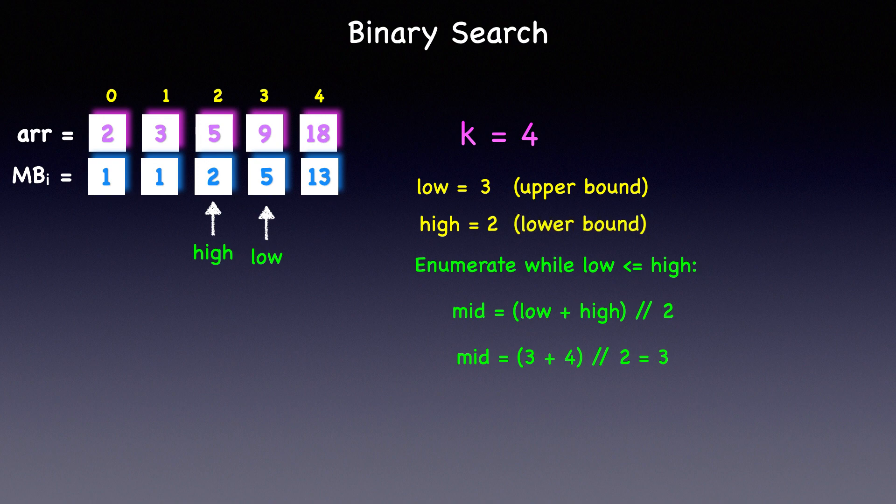Do recall from the earlier slides that since the high index has crossed over the low index, the low index will become the upper bound and the high index becomes the lower bound between which the kth positive integer is located. Therefore, the kth missing number or the fourth missing number can be calculated as high + k + 1, which is equal to 2 + 4 + 1, which is equal to 7. So let's now review the code for binary search.